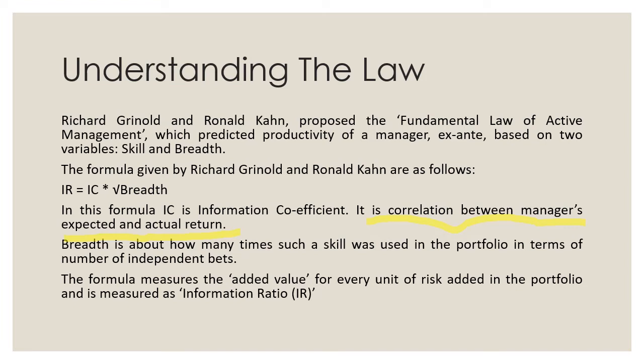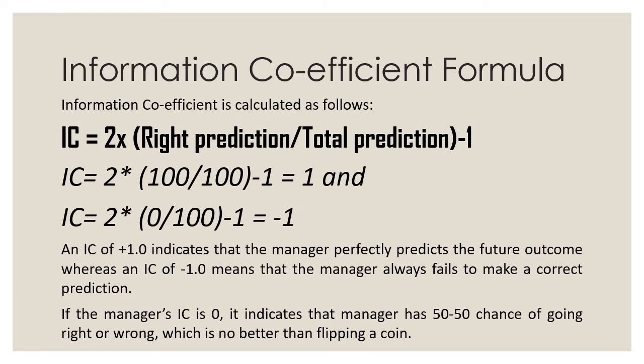The Information Coefficient is calculated through a formula defined as: IC = 2 × (right predictions / total predictions) − 1. Using this, we can find out how effectively or correctly the manager predicts future outcomes. For example, if a fund manager makes 100 correct predictions out of 100 total predictions, then 2 × (100/100) − 1 = 2 × 1 − 1 = 1.